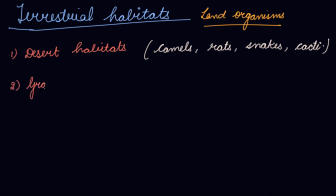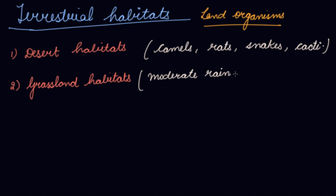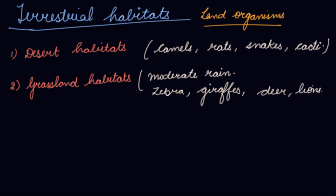The second terrestrial habitat is grassland habitats. Grassland habitats get moderate rain. Examples of living organisms in these habitats include zebras, giraffes, deer, lions, and grass.